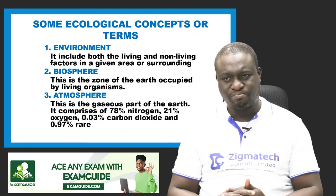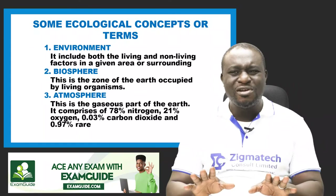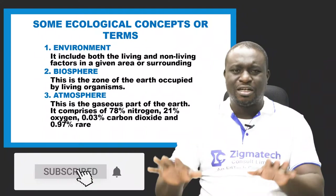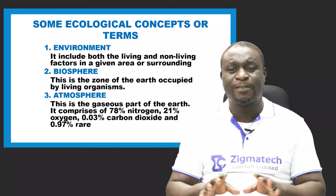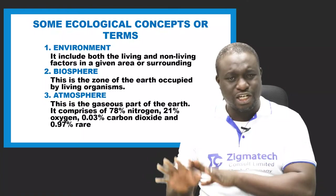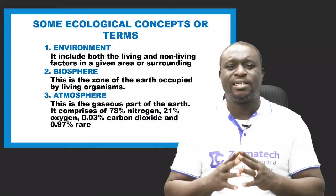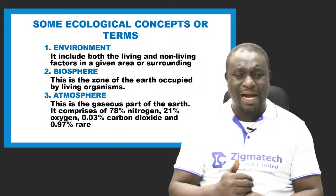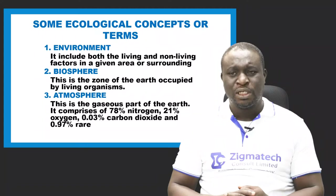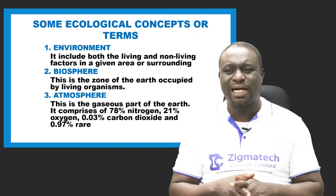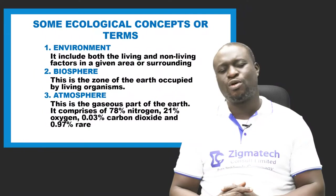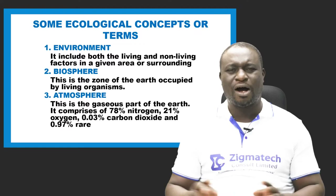Number two is biosphere. The biosphere is the zone of the earth where living things occupy or can be found to exist. We can divide the biosphere into three major parts. First is the atmosphere, which is the gaseous part of the earth. It comprises 21% oxygen, 0.03% carbon dioxide, 78% nitrogen, and 0.97% rare gases, among other substances.